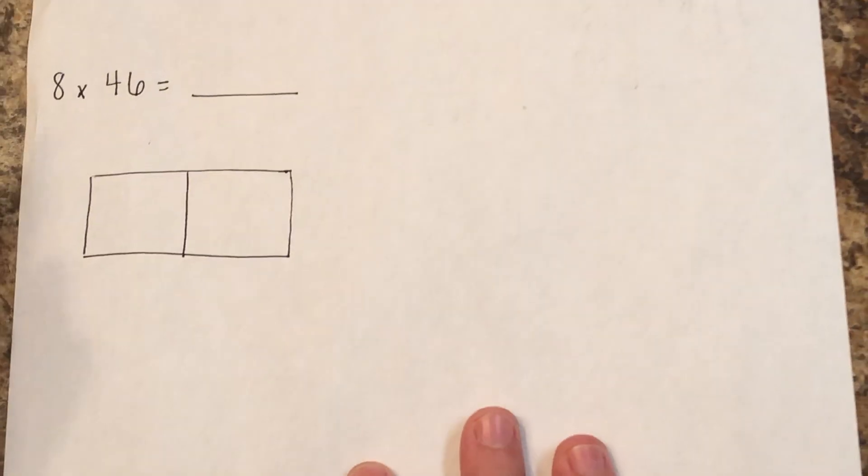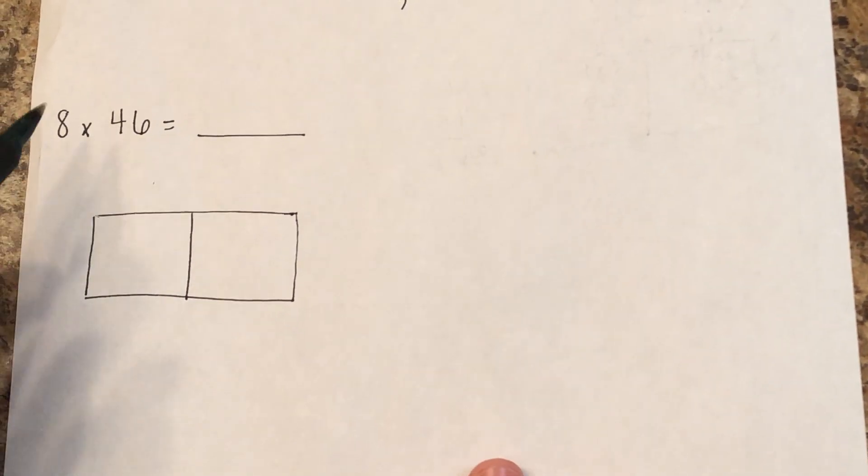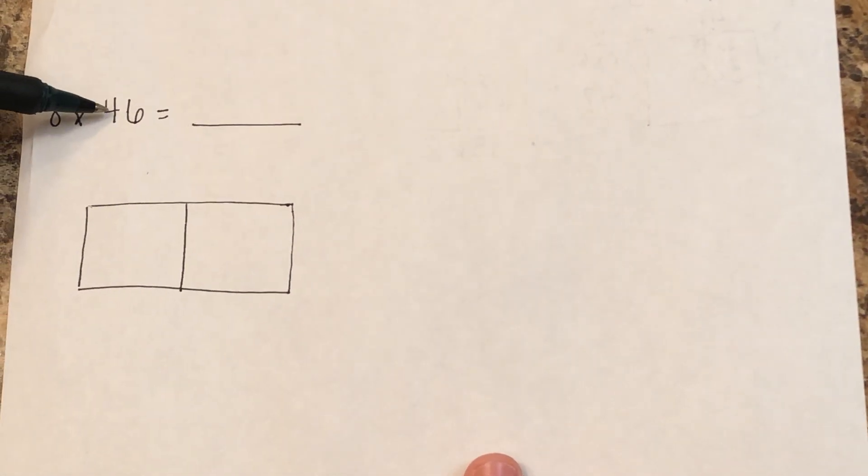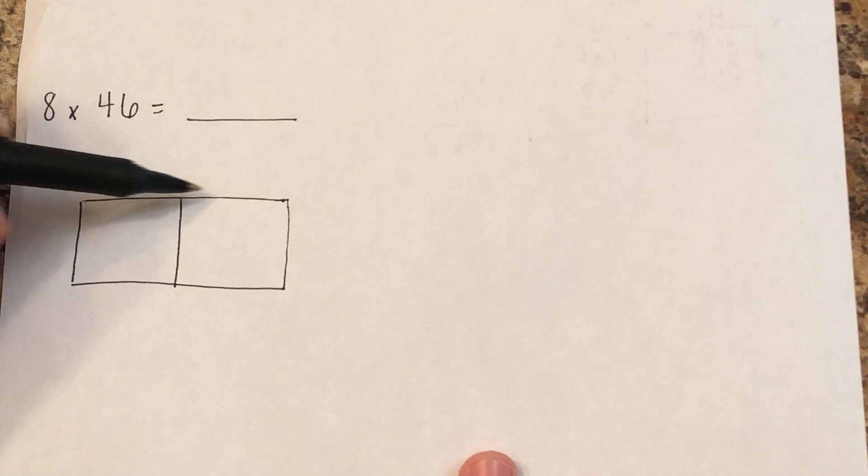I also wanted to show you how to do a 1-digit number times a 2-digit number. Since you only have 1 digit here, you only need 1 row. And then you have a 2-digit number, so you need 2 columns.